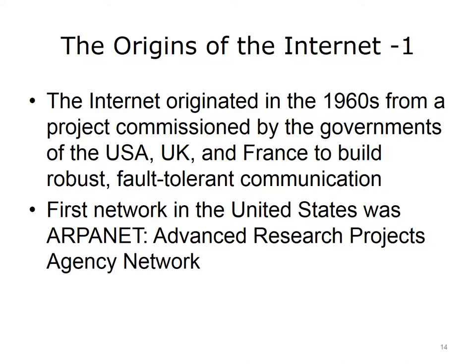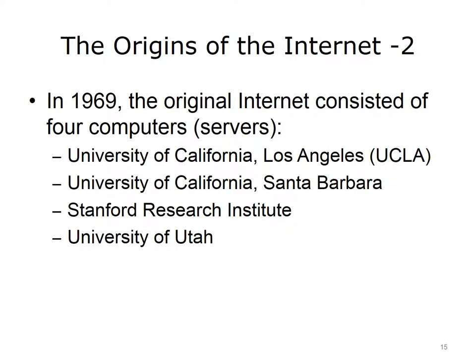For some, it would seem that the Internet has been around forever, but that is not the case. The Internet originated from a project commissioned by the governments of the USA, UK, and France in the 1960s to build robust, fault-tolerant communication via computer networks. In the United States, the first network was named ARPANET, or Advanced Research Projects Agency Network. The original Internet consisted of four computers, or servers, operating at UCLA, the University of California Santa Barbara, Stanford, and the University of Utah in 1969 — the same year that the United States put a man on the moon.